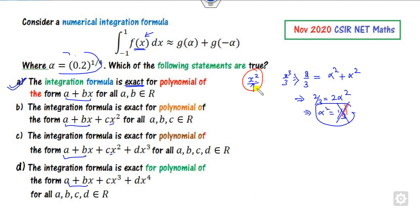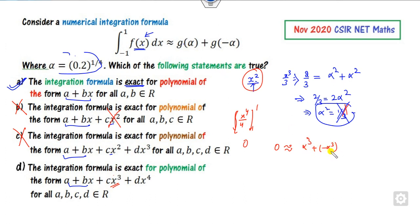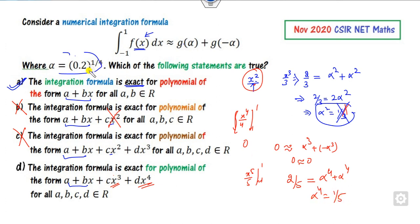Since x² fails, every option containing x² is cancelled out — options b and c are cancelled. Now check x³: the integration of x³ from −1 to 1 gives x⁴/4, which equals 0. The right-hand side alpha³ + (−alpha)³ = 0, so this is consistent. For x⁴: the integration gives x⁵/5 from −1 to 1 = 2/5. So alpha⁴ + alpha⁴ = 2/5, meaning alpha⁴ = 1/5, which is the correct option. Therefore options a and b are the correct options.